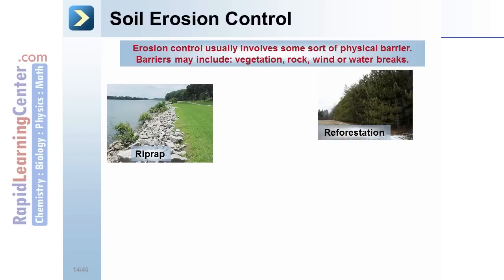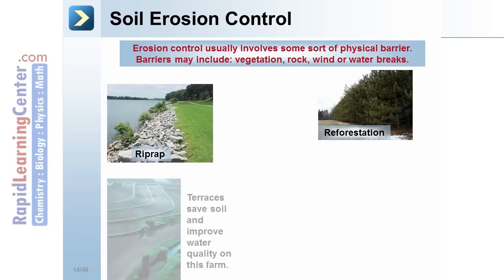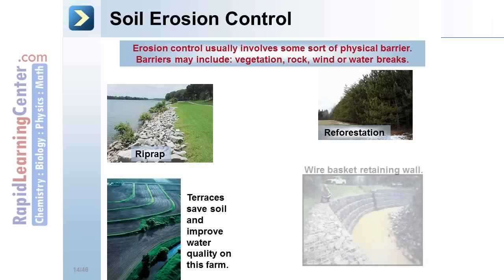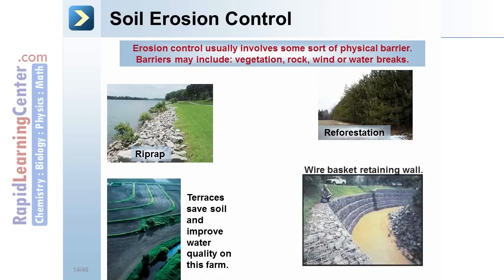Reforestation can act as a windbreak. Terraces save soil and improve water quality on a farm. Wire baskets may act as a retaining wall on a hill.